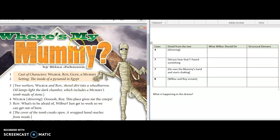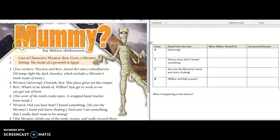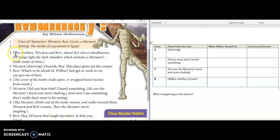So first of all, let's go ahead and just read through this one time. Where's My Mummy - we have cast of characters: Wilbur, Roy, Glenn and a mummy. The setting is the inside of a pyramid in Egypt. Two workers Wilbur and Roy shovel dirt into a wheelbarrow. Oil lamps light the dark chamber which includes a mummy's tomb made of stone. Wilbur shivering: 'Ooh Roy, this place gives me the creeps.' Roy: 'What's to be afraid of Wilbur, just get to work so we can get out of here.'